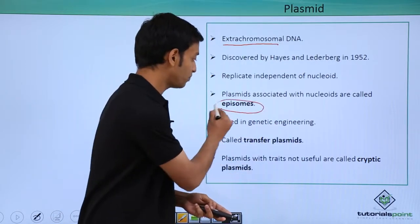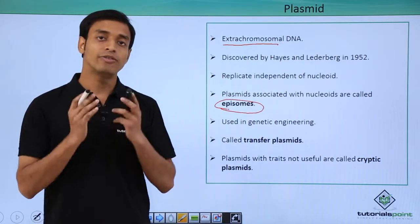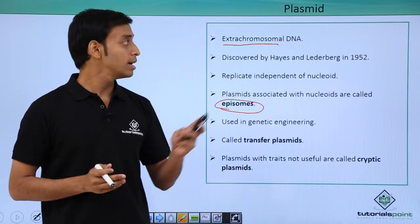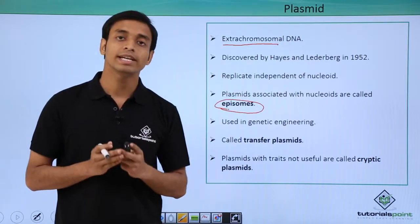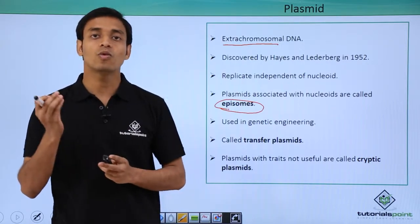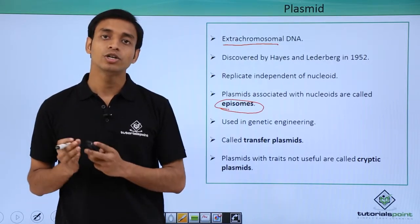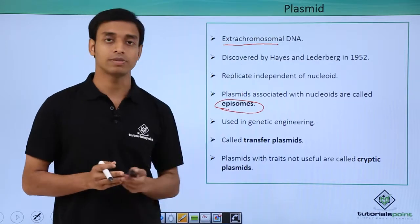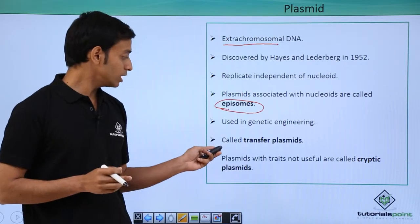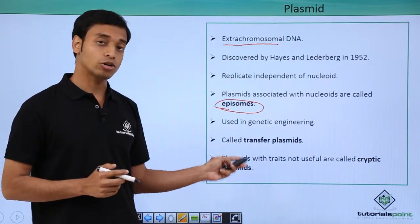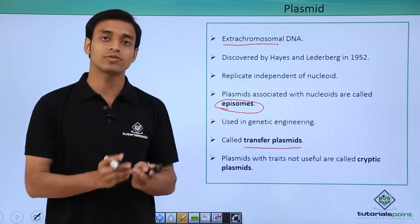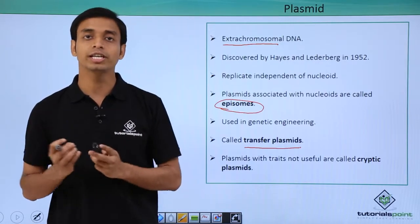A very important function of plasmids that we have tried to use is in genetic engineering. We try to put genes from one organism into another with the help of plasmids, and this can be done in various organisms. Hence, these plasmids are also known as transfer plasmids, because they help in the transfer of genetic material or genes from one organism to a desired organism.